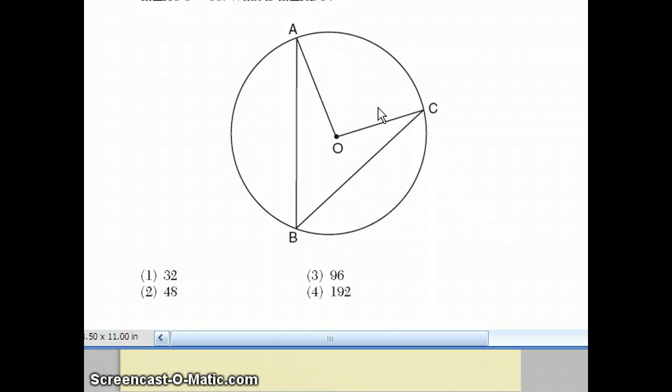Well, because AOC is a 96 degree angle, that makes AC a 96 degree arc, because a central angle always has the same degree measure as the arc. Angle ABC is called an inscribed angle, and it's always half the intercepted arc, which is the same arc AC. So arc AC is 96 degrees, therefore angle ABC is half of that, which is 48, which is choice 2.